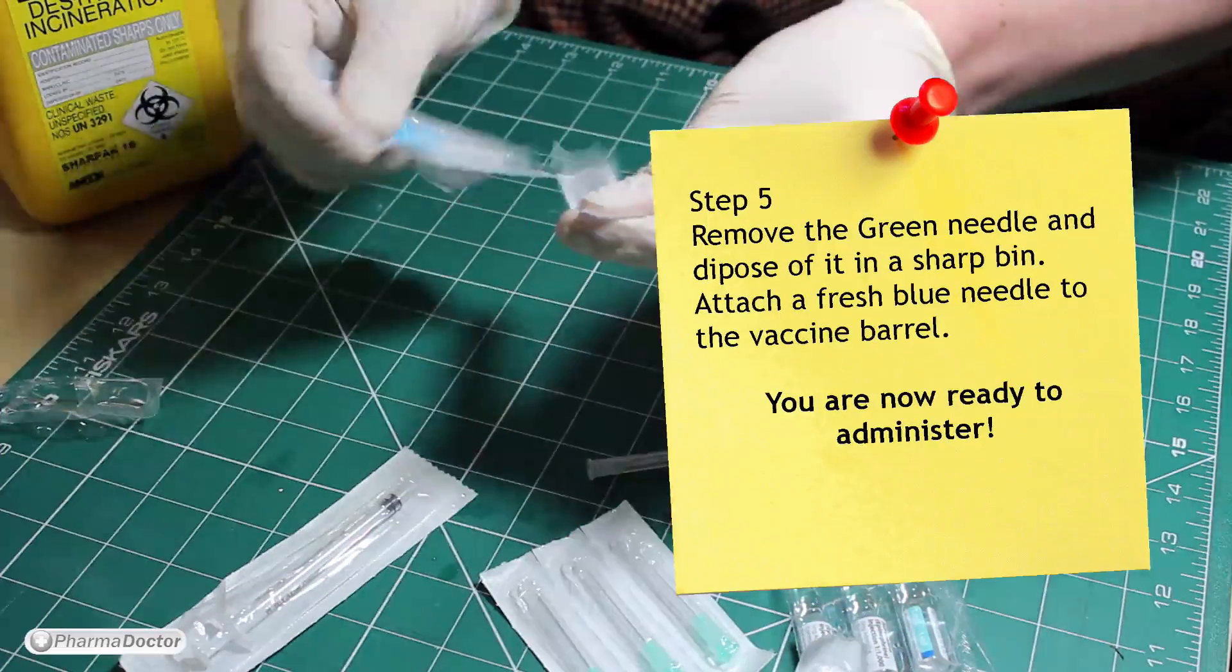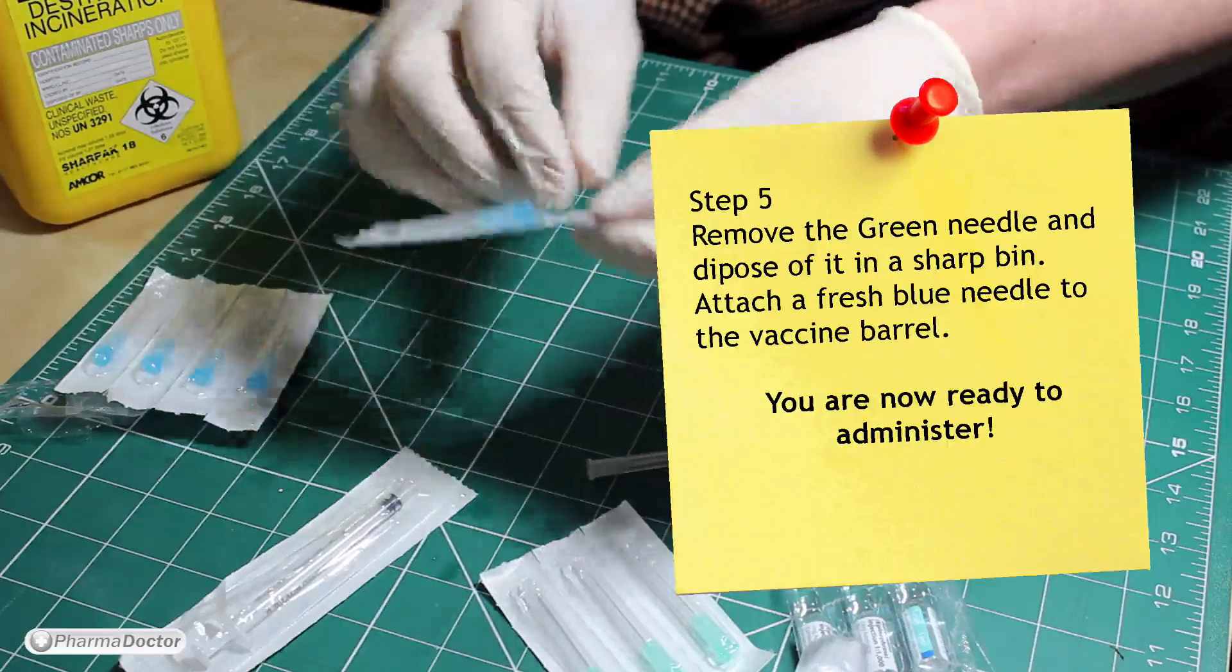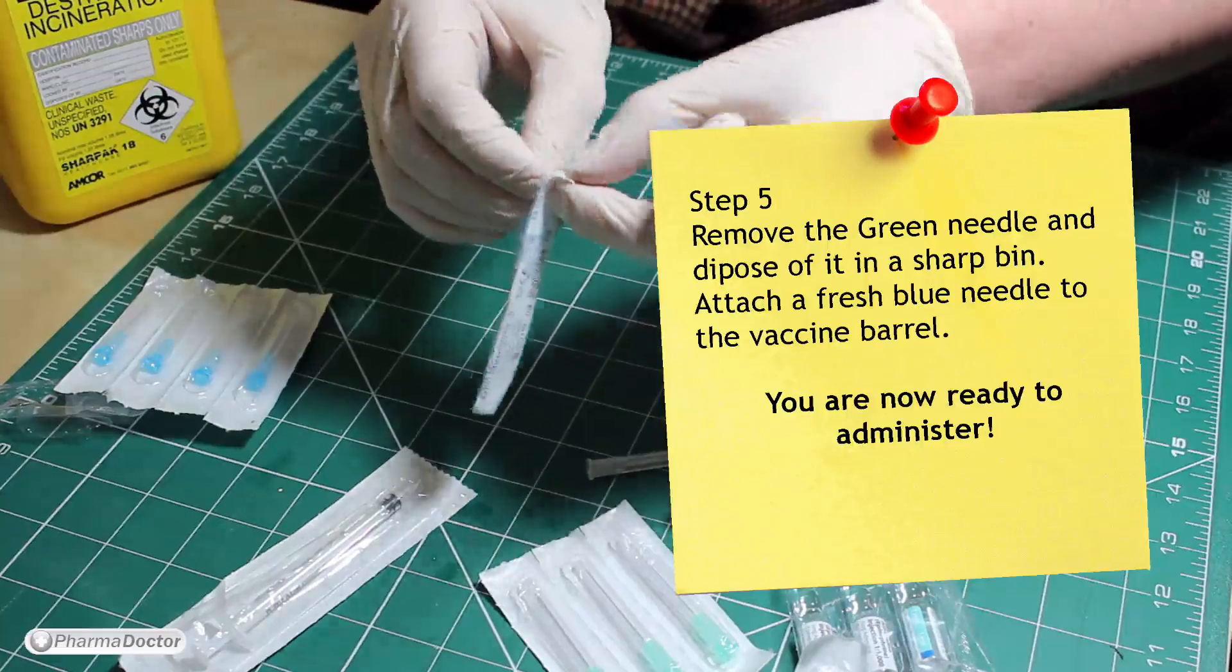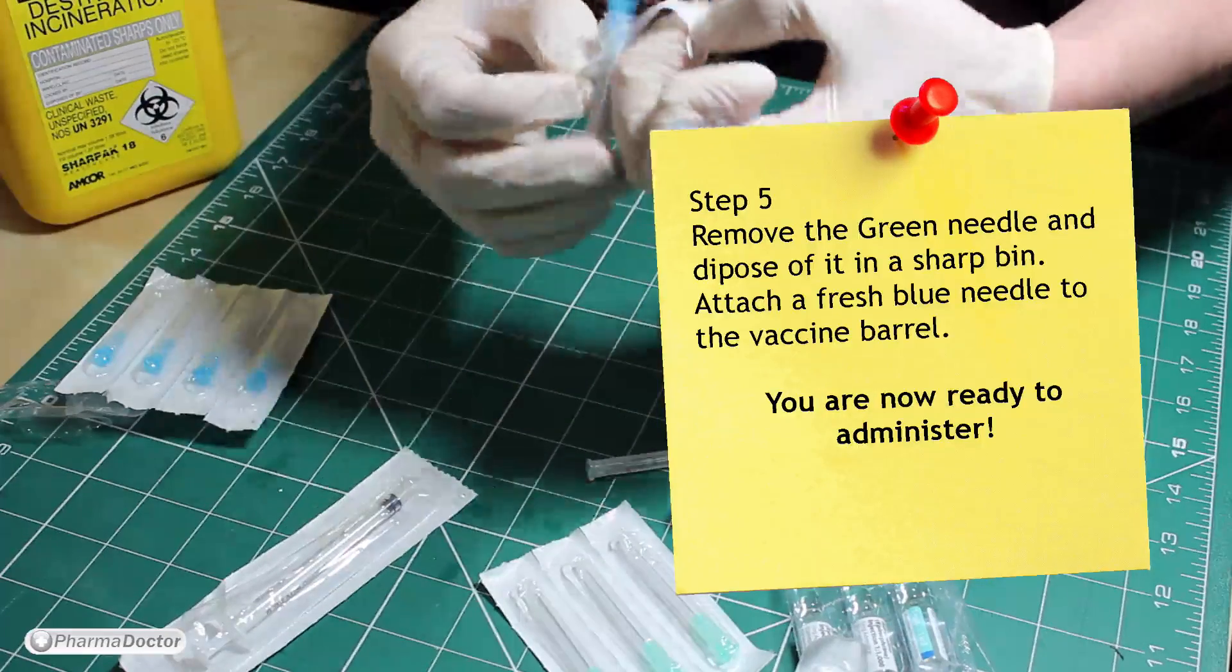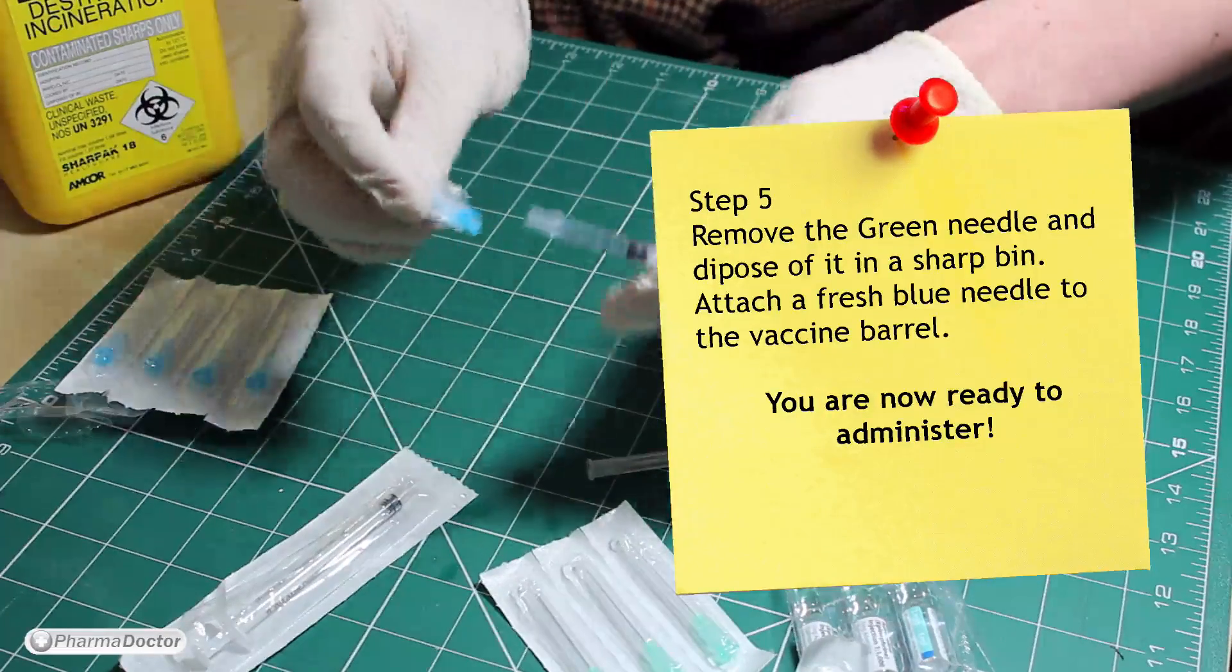Step 5 is to remove the green needle and dispose of it in a sharps bin. After this you can attach a fresh blue needle to the vaccine barrel and you're ready to administer.